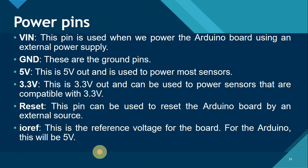The power pins include: VIN (input voltage), used when powering the Arduino with an external power supply; ground pins; a 5-volt pin, which is 5V out used to power most sensors; a 3.3-volt pin, which is 3.3V out used to power sensors that operate only at 3.3 volts; a reset pin that can be used to reset the Arduino board from an external source; and IORef, the reference voltage for the board, which for the Arduino Uno is 5 volts.